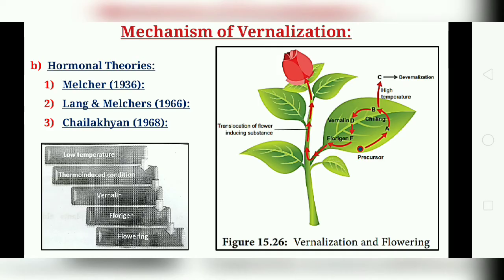They reported a direct connection between vernaline and florigen. The following scheme gives an idea regarding the mechanism of vernalization: low temperature leads to thermo induction conditions, then vernaline is formed, then florigen, and finally flowering formation. Lank and Mackler in 1966 proposed that vernalization involves the formation of a floral hormone called vernaline.